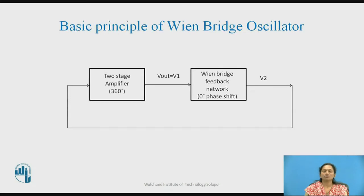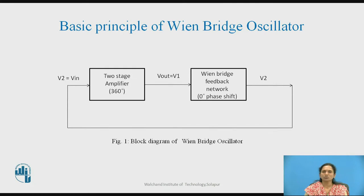A total phase shift of 360 degrees is obtained with this two-stage amplifier and will be maintained such that sustained oscillations can be obtained. The Wien Bridge Oscillator is a circuit which provides sine waves at the output with a frequency range of 20 Hz to 20 kHz. It is also called a type of audio oscillator.